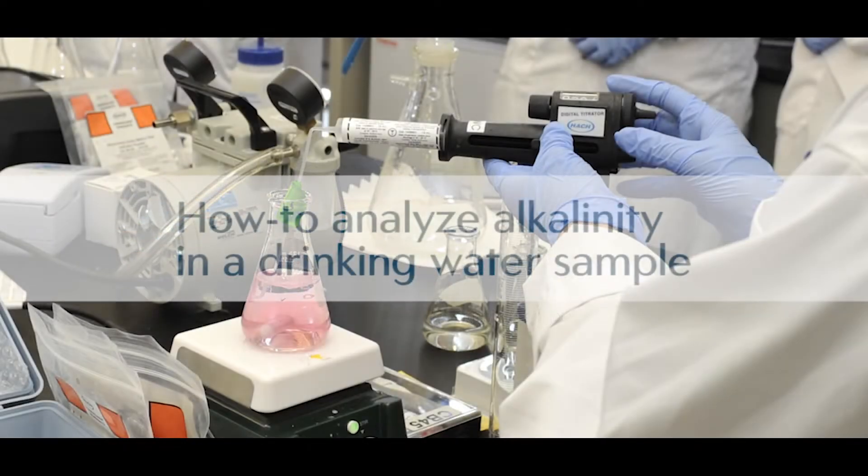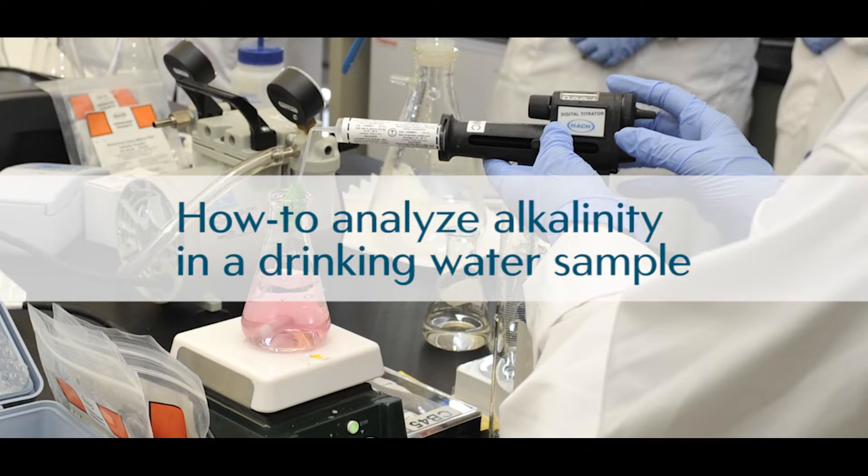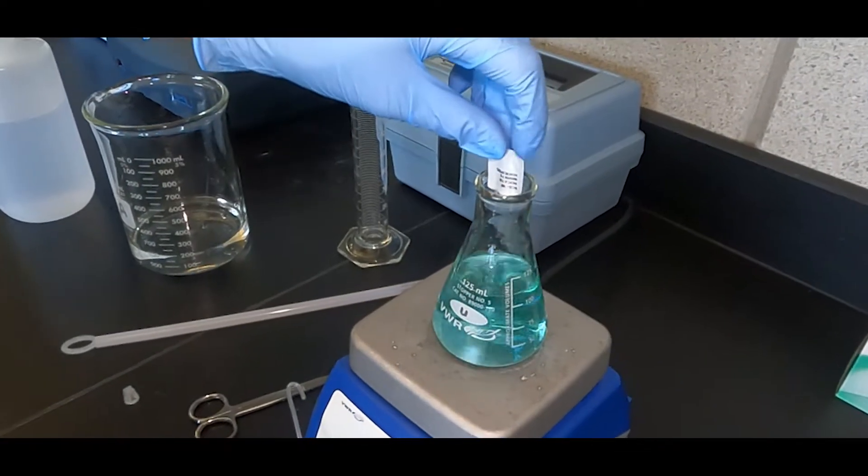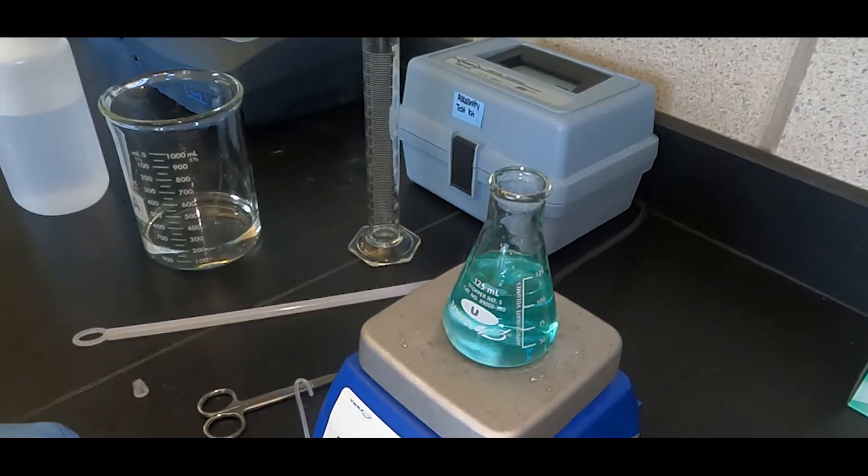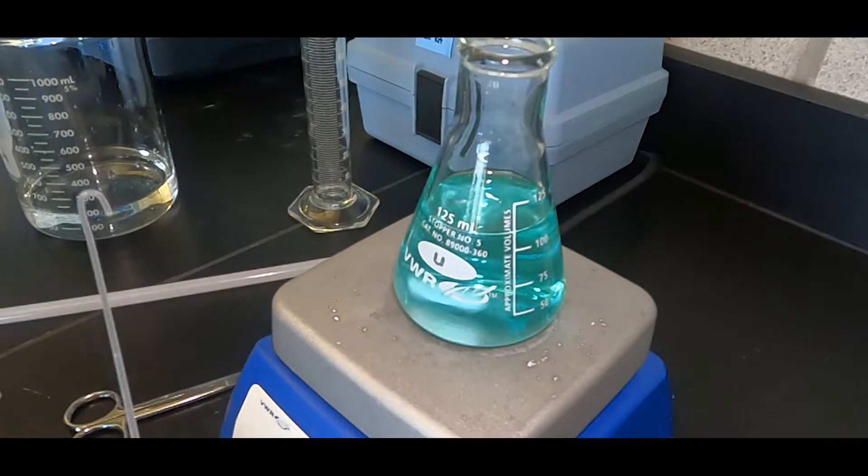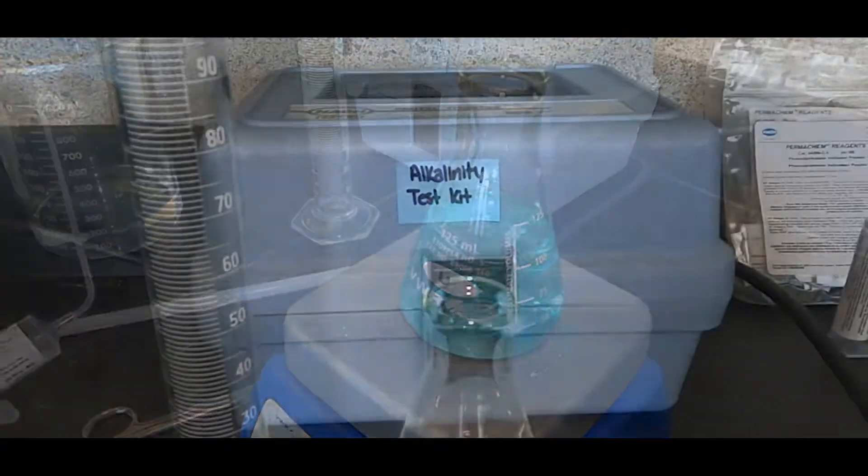Alkalinity is a water's buffering capacity or its ability to resist change in pH. This procedure involves titrating a water sample using sulfuric acid solution to an endpoint determined with color indicators or a pH meter.